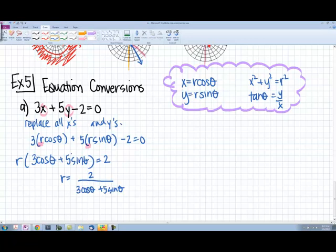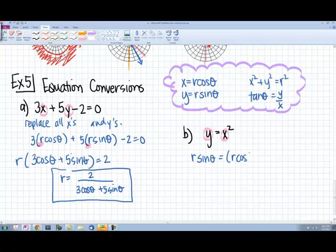So let's try another one. What kind of graph is this? Y equals x squared. That would be the equation of a parabola. So let's see what this would look like. Same kind of thing. Replace all the x's and the y's.